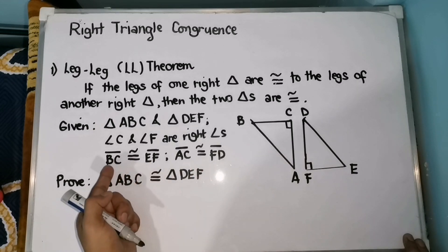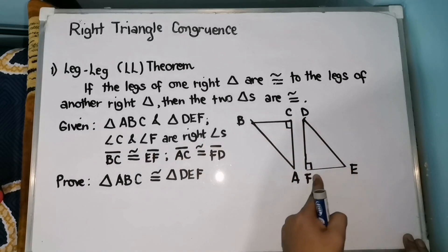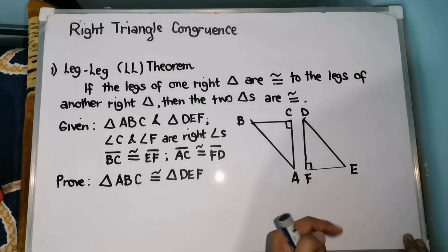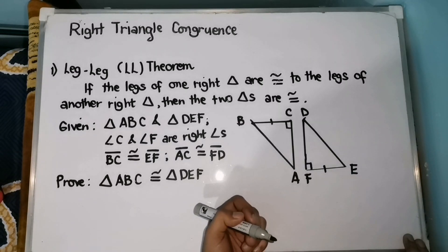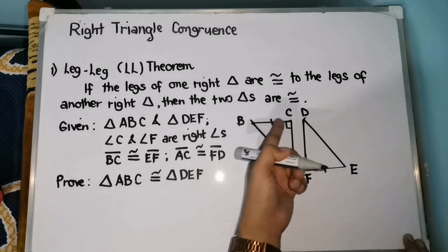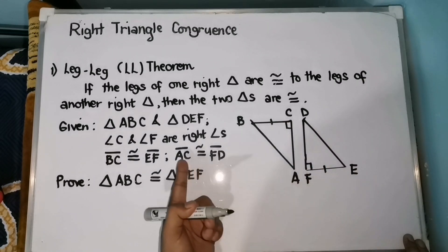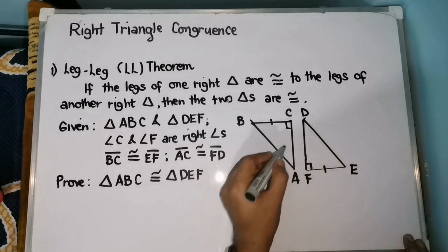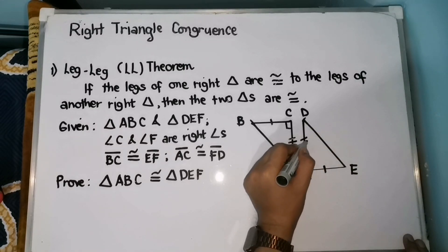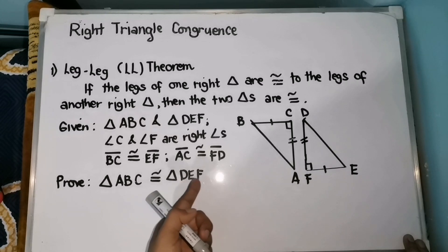Another given is segment BC and segment EF — they are congruent segments, so we put a special marking. Segment BC is congruent with segment EF. The other given is that segment AC is congruent with segment FD. We are going to prove that triangle ABC is congruent with triangle DEF.